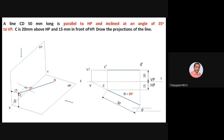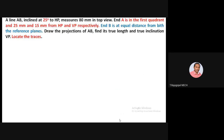If you extend a line parallel to the horizontal plane, it keeps running parallel — no trace can be obtained, so no horizontal trace. Now we solve a problem with line AB inclined to both planes, which has one additional condition different from previous problems. Read the question: line AB is inclined at 25 degrees to HP and measures 80 mm in the top view.